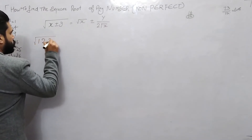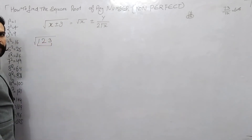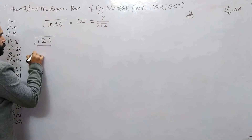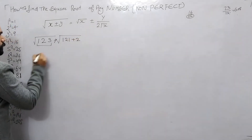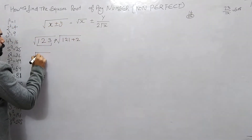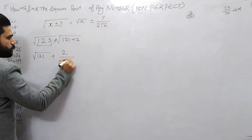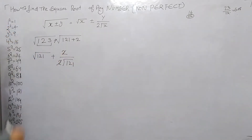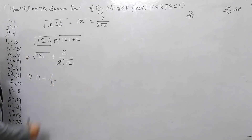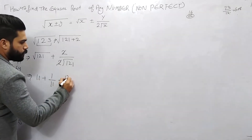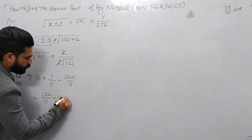Let's take the example of √121. The perfect square root digit is 121. We write it as 121 plus 0. x is 121, y is 0. Applying the formula: 121 plus 0 over 2 root 121. Root 121 is 11. So 1 plus 1 over 11 — that gives 12 over 11, equal to 11.09. That is the answer.